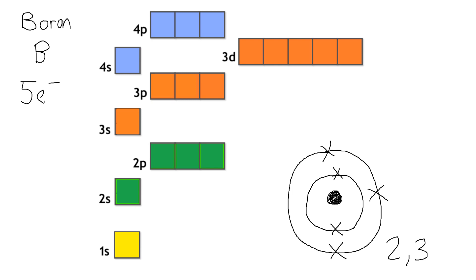Each orbital can hold two electrons, and there are three types of orbital we need to know about at A-level: s orbitals, p orbitals, and d orbitals. S orbitals can hold two electrons. P orbitals — there are three lots of two — so they can hold six electrons in total. And for d, it's five lots of two, making ten.